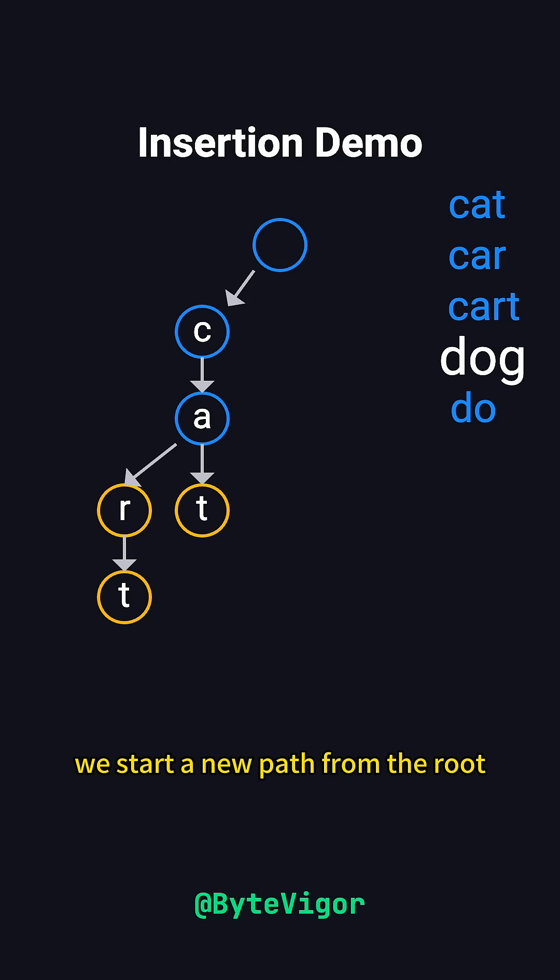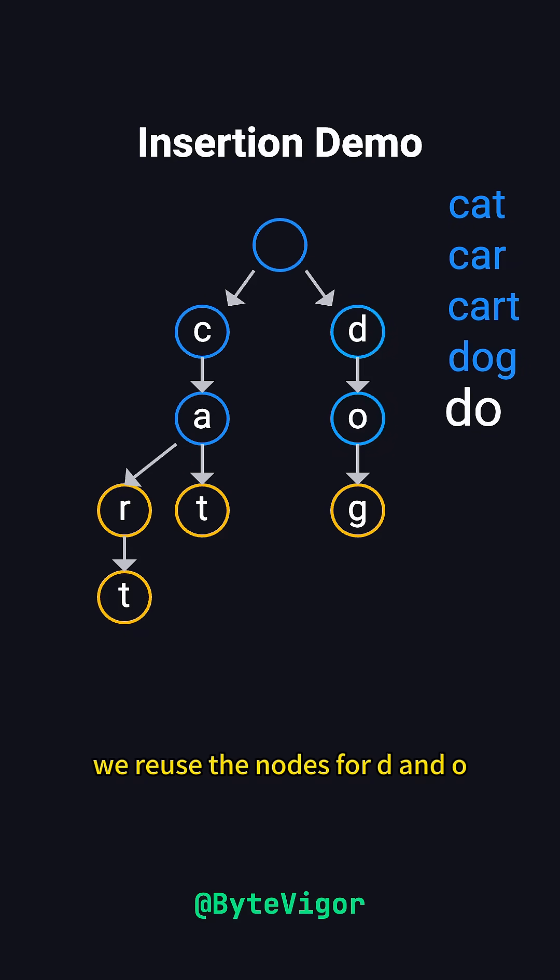For dog, we start a new path from the root, adding nodes for d, o, and g, and mark the node for g as the end. Finally, for do, we reuse the nodes for d and o, and simply mark the node for o as the end of the word.